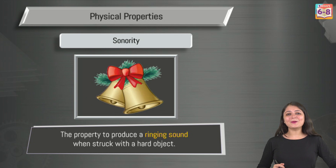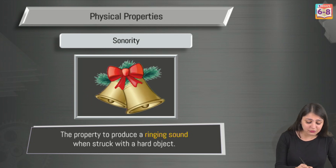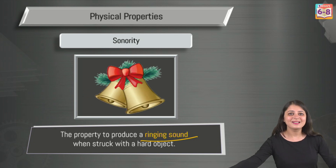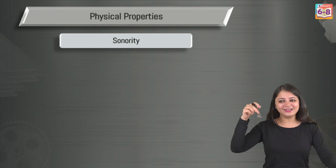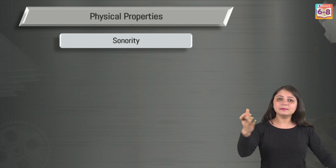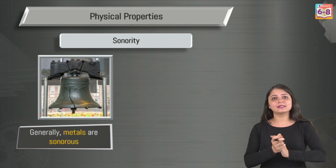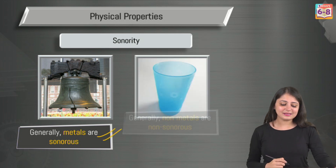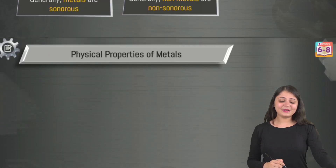The next property is sonority — the property of producing a ringing sound when struck. I have a bell here — it produces a sound when hit. Your school bell is also made of bronze, which is an alloy of copper and tin. Metals are generally sonorous, while nonmetals are non-sonorous.